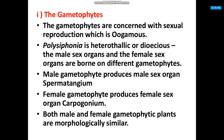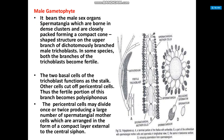The male gametophyte produces the male sex organ spermatangium; the female gametophyte produces the female sex organ carpogonium. Both male and female gametophyte plants are morphologically similar. The male gametophyte bears the male sex organ spermatangia, which are borne in dense clusters and are closely packed forming a compact cone-shaped structure on the upper branch of the dichotomously branched male trichoblast.